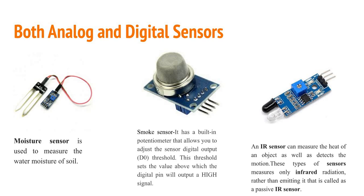For the smoke sensor, you can use both analog and digital values. For example, if you have made a smart garage and you put a smoke sensor on the garage door, the sensor can detect how much smoke there is and automatically open the door. You can also use it digitally — if any smoke is detected, a one-zero signal triggers a buzzer or notification that smoke is present in the house.